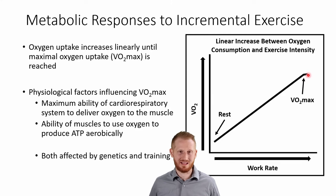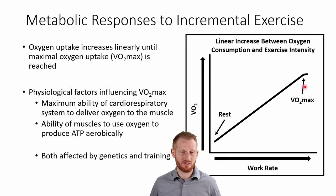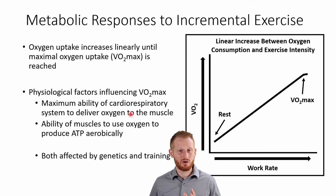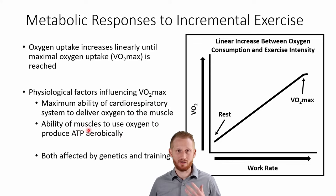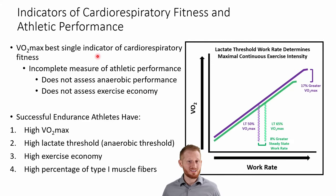VO2 max is as high as you can go with aerobic metabolism — hence aerobic capacity. Endurance athletes always want to increase their VO2 max. What limits it? Your cardiorespiratory system's ability to get oxygen out to the body — specifically the muscles — and your muscles' ability to bring in oxygen and use it aerobically within the mitochondria to produce ATP. These are two different things that must work together, heavily influenced by both genetics and training. VO2 max is widely considered the single best indicator of cardiorespiratory fitness.